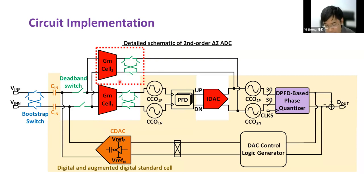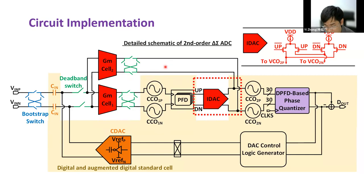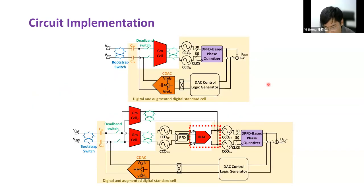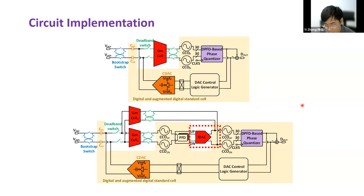Based on the first-order noise-shaping architecture, we add extra VCOs and PFDs to extend the noise-shaping order to second-order. An extra GM cell is also introduced to ensure the stability of the delta-sigma loop. The current DAC converts the phase difference of the CCO from phase domain to current domain and performs summation with the feed-forward GM2 output current. The second-order VCO-based ADC can share most of the library from the first-order design except for the current DAC. This one-time setup library can be used to build even higher noise-shaping ADC.